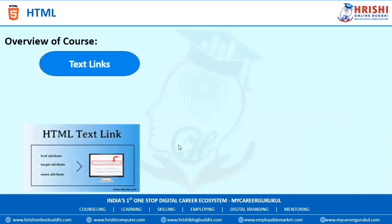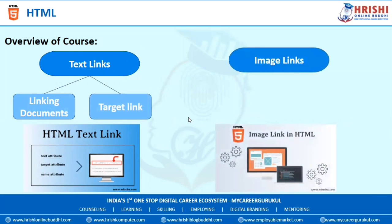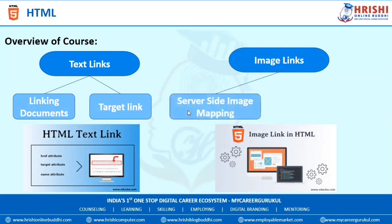The next topic is Text Links. In this, we will learn how to link within a document and use target attributes. The next topic is Image Mapping. In this, we will learn how to do server-side image mapping, client-side image mapping, and how it all works and is used.